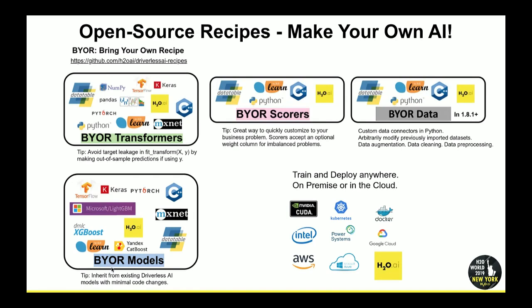Once you have a model that makes predictions, how do you know it's good? You compare actuals and predicted — you take these two columns and see if the squared error is small or the sort order is right. You can now make custom scorers — anything you want. There's even a way to make arbitrary data from scratch in Python or modify an existing dataset, both of which are being released in the next-generation 1.8.1 version coming out in a week or so.